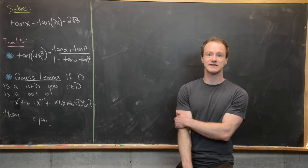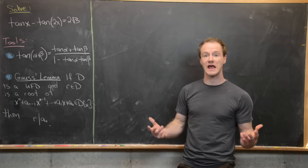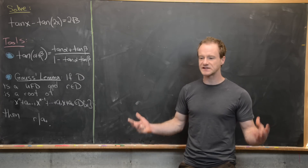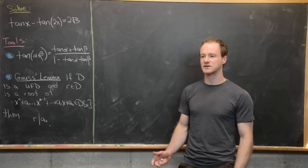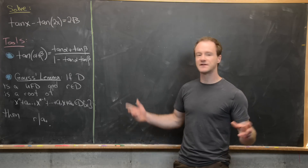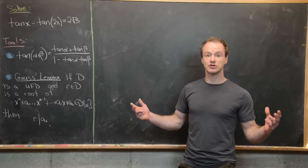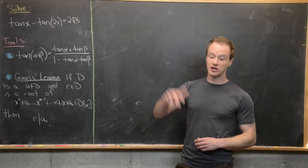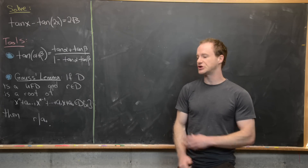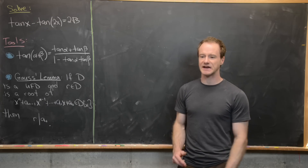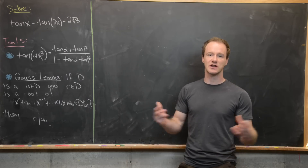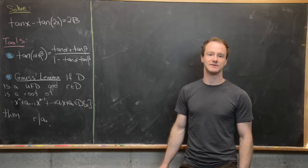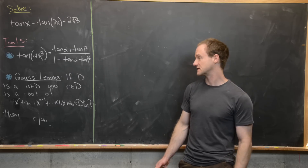Next, we're going to use Gauss's lemma for a unique factorization domain. This is one small part of the solution, so if this looks foreign to you, just look at how we're going to apply it. If you find it interesting, you can look at my playlist on abstract algebra to build yourself up to understanding this lemma.